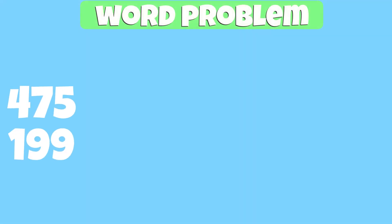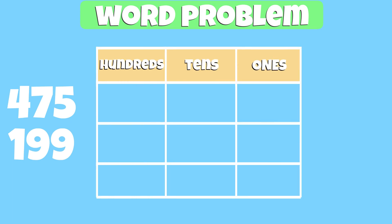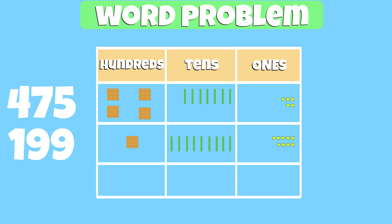We can represent both numbers through pictorial models using our understanding of place value. In the number 475, we have 5 groups of 1, 7 groups of 10, and 4 groups of 100. In the number 199, we have 9 groups of 1, 9 groups of 10, and 1 hundred. Since we're subtracting from the number 475, this number will be placed at the top.